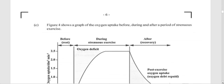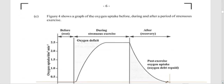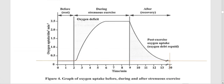Moving on to part C: Figure 4 shows a graph of oxygen uptake before, during, and after a period of strenuous exercise — like running or hard work. The first part of the graph shows rest. Strenuous activity starts and ends at certain points, then the recovery period begins and ends. The oxygen deficit is created during exercise, and the post-exercise oxygen uptake represents the oxygen debt being repaid.